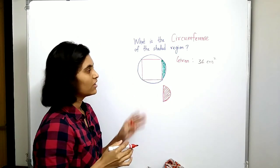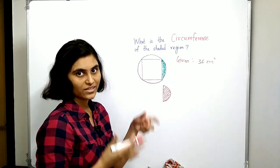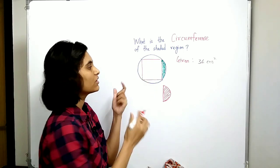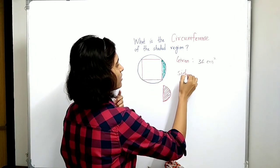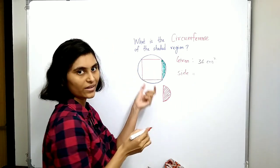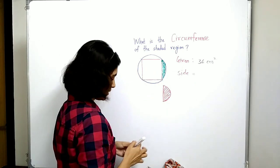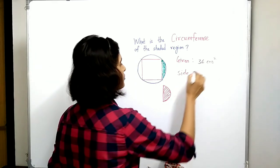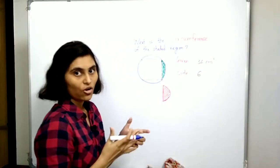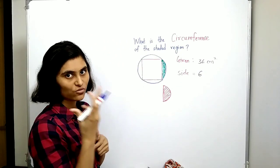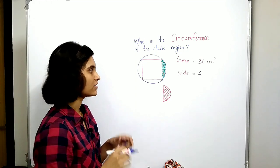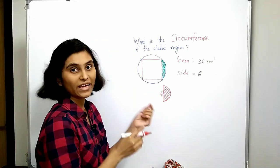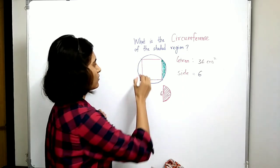Here we have 36 as the area of the square, so clearly the side of this square is the square root of 36, which is equal to 6, because we know that the area of a square is side squared. So this part is done — we have 6 as the side of this square.